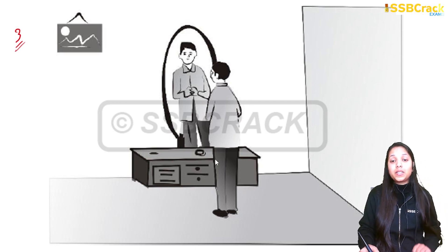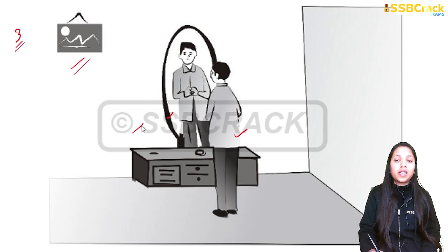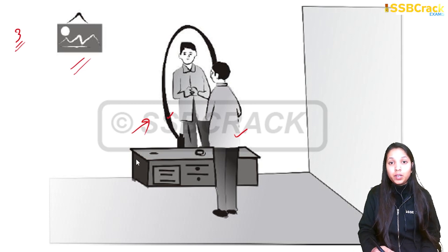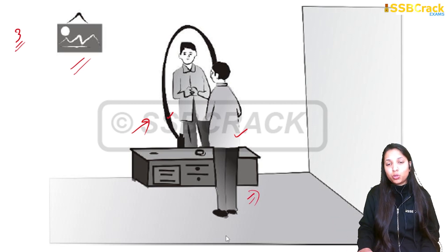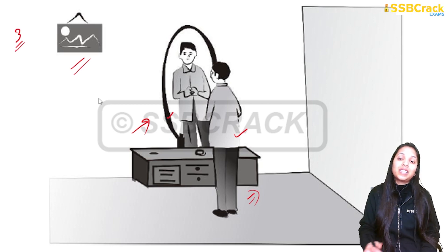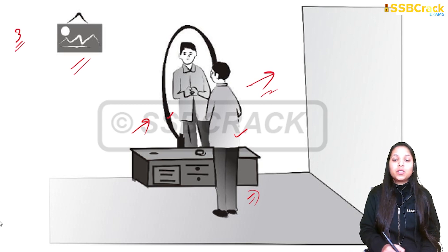If you observe the third picture, you can see a man standing in front of a mirror wearing a formal coat and pants, with a painting on the wall — indicating a home setting. The person is in formals, so you can imagine an official meeting, interview, seminar, or any such scenario. It is up to you what context you choose.